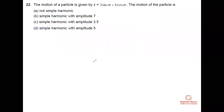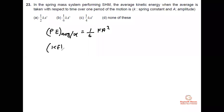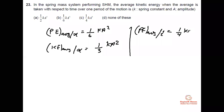Next question: in a spring-mass system performing SHM, the average kinetic energy over one period with respect to time is 1/4·ka². Average potential energy with respect to displacement is 1/6·ka², and average kinetic energy with respect to displacement is 1/3·ka². Similarly, average potential energy with respect to time is 1/4·ka², and average kinetic energy with respect to time is also 1/4·ka². Your answer is 1/4·ka².